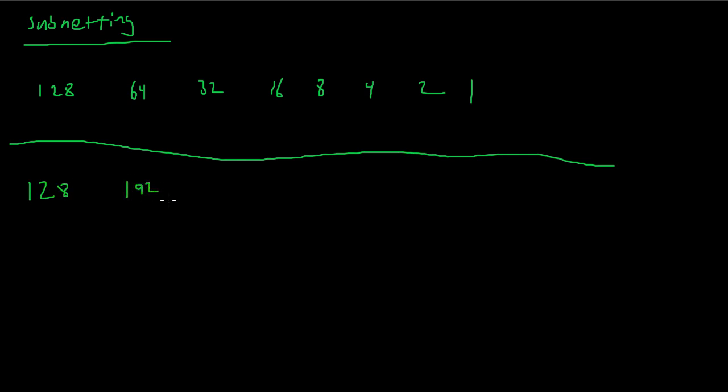This table starts off the same—it starts at 128. But then the next number is 192. Well, 192 is 128 and 64 added together. We are pre-adding our numbers so that it's quicker, compressing the steps in our subnetting. So 192 plus 32 gives us 224, 224 plus 16 gives us 240, and we continue the addition: 248, 252, 254, and 255. This is the new table to remember.